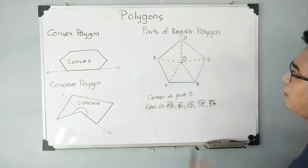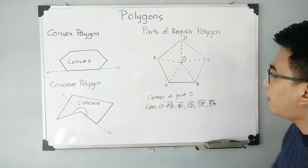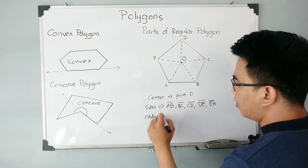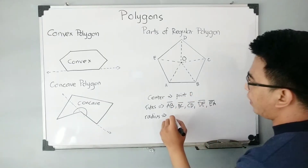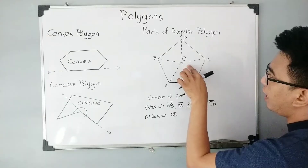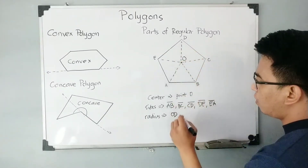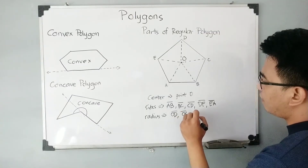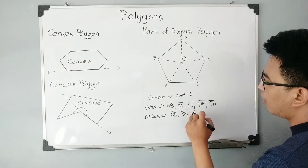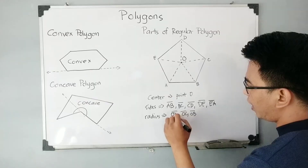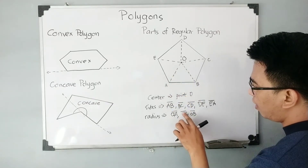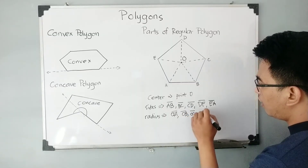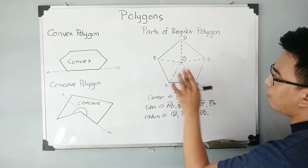Another thing to remember here is what we call the radius. The radius goes from the center up to the vertices. We have segment OA, segment OB, segment OC, segment OD, and lastly segment OE.